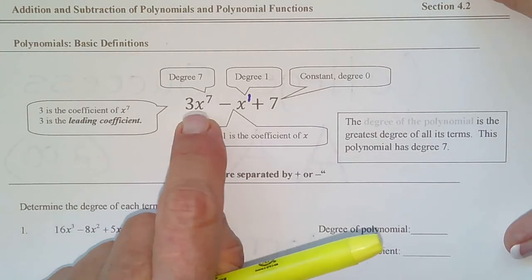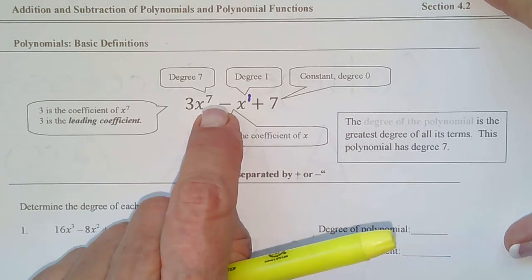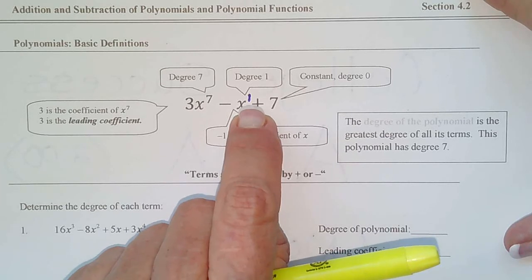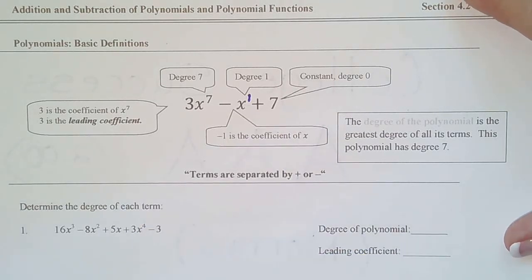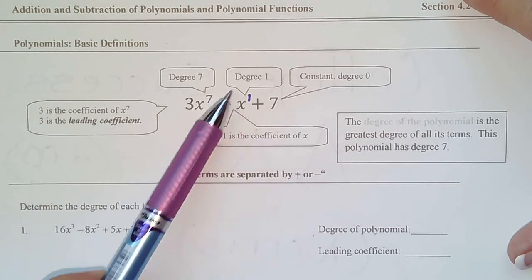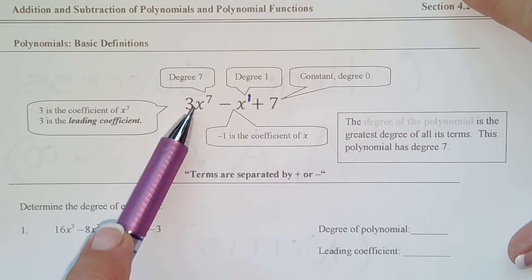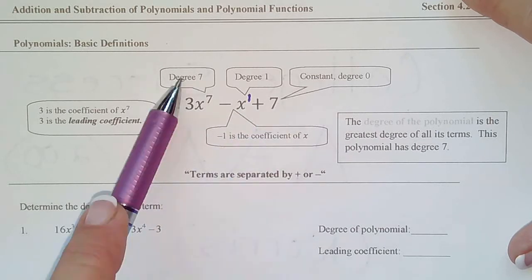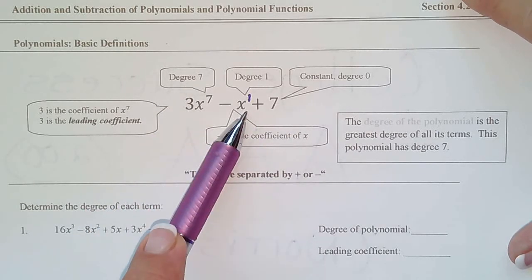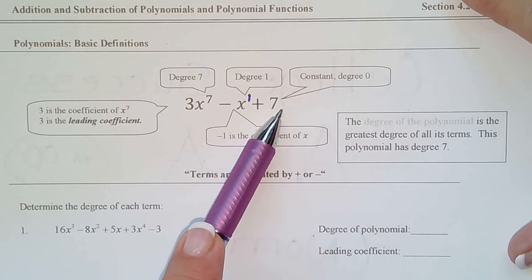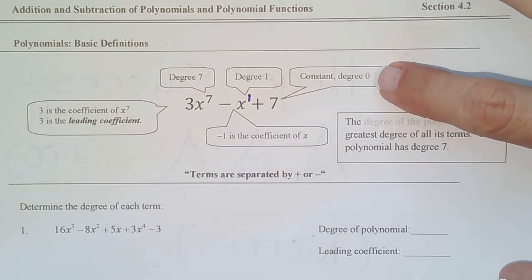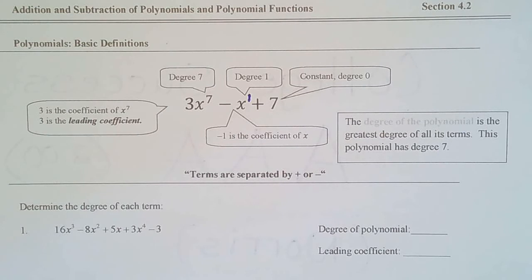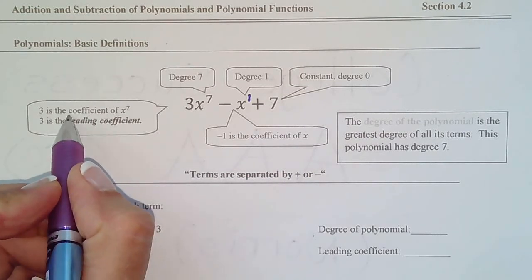This term is considered degree seven because the exponent is seven. Notice I put in the little one — anytime an exponent is missing, there's an assumed one there, so that term is degree one. Remember, terms are things separated by addition and subtraction signs, so there are three terms here. The first term is degree seven, the second is degree one, and seven has no variable so it's degree zero. All constants have degree zero.